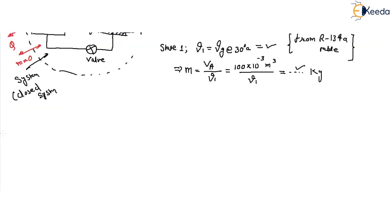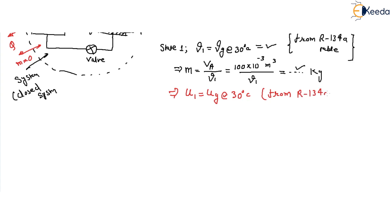To find heat transfer, we also require the internal energy. The internal energy at State 1, U₁, equals U_g at 30 degrees centigrade, obtained from the R134A table.